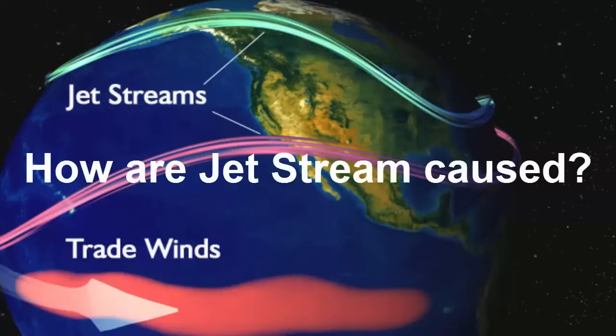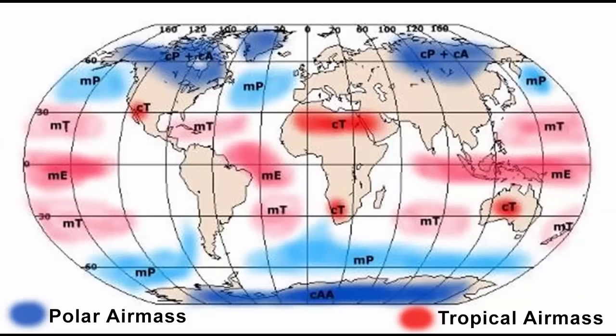How are jet streams caused? Jet streams are caused by the temperature difference between tropical air masses and polar air masses. Tropical air is warm and polar air is cold due to their relative locations.